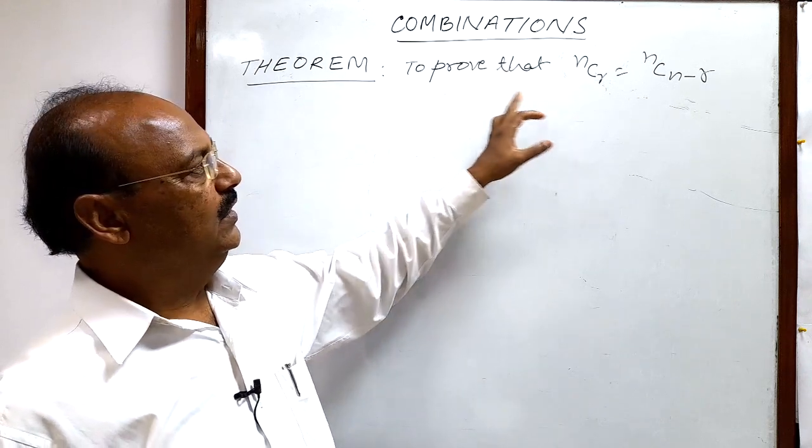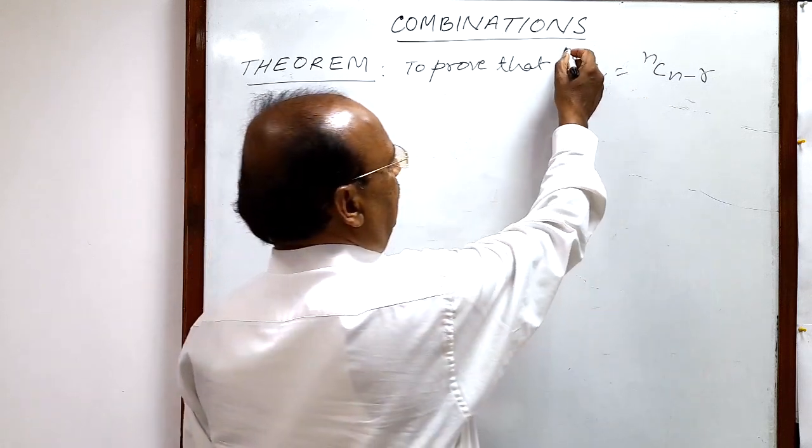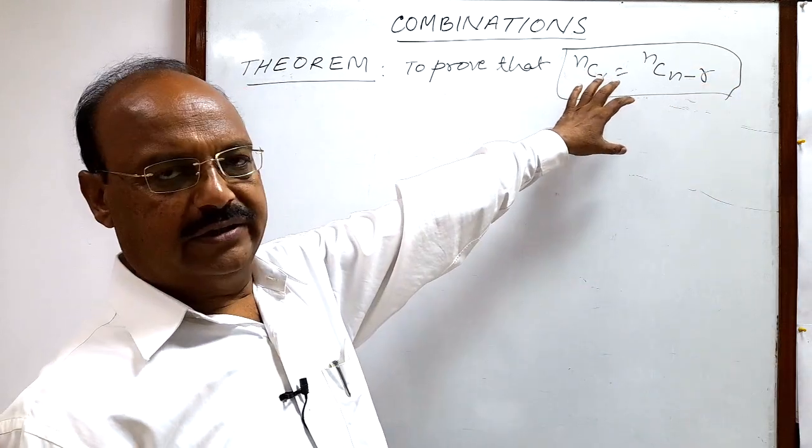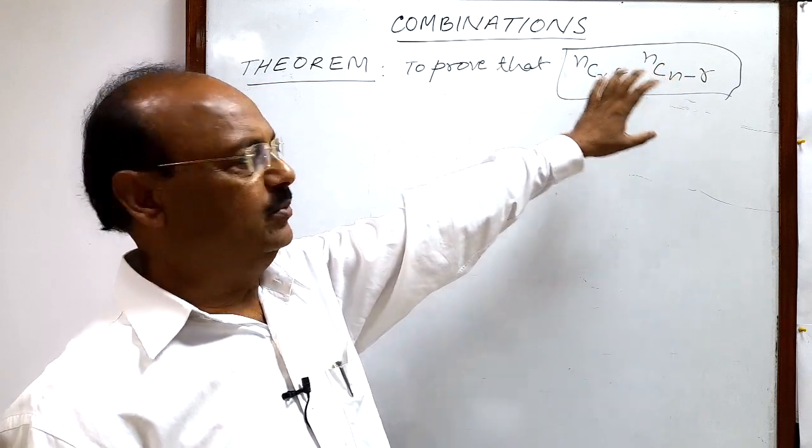Here we have to prove that nCr is equal to nC(n minus r). This is a very useful result that we can use while doing the problems and exercises of this topic.